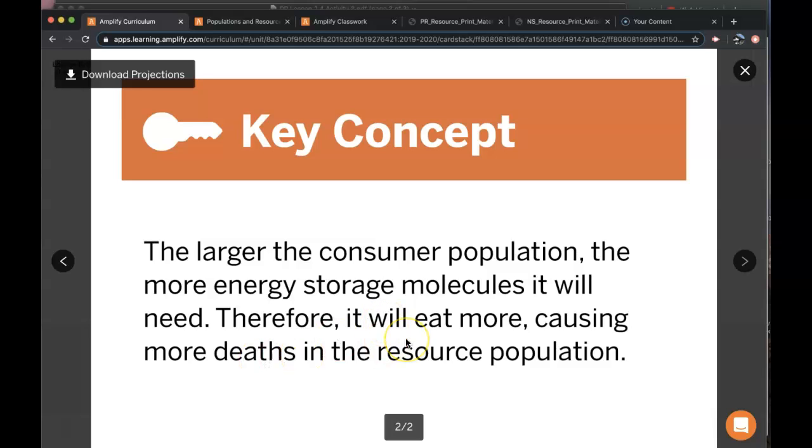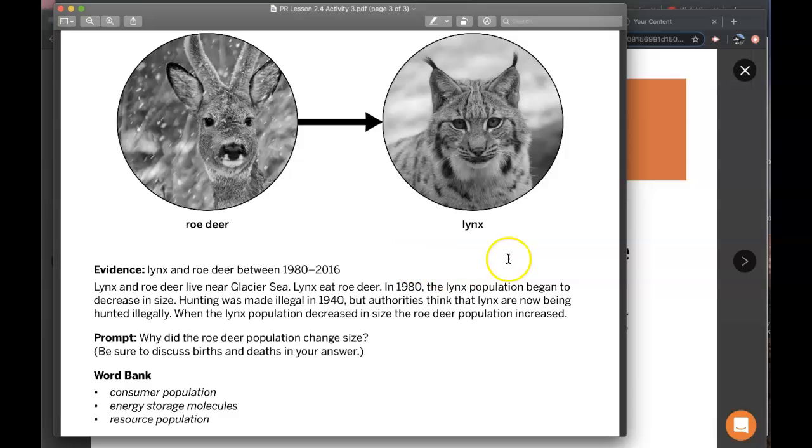causing more deaths in the resource population. The more lynx there are, the more energy storage molecules they need to survive as a whole population, so they need to eat more roe deer to live.